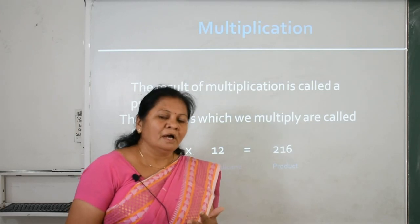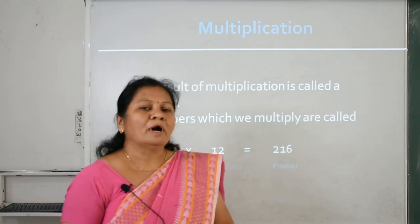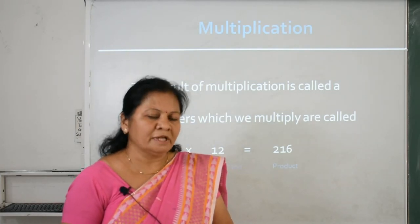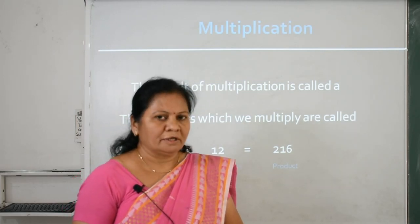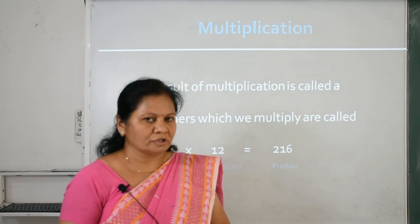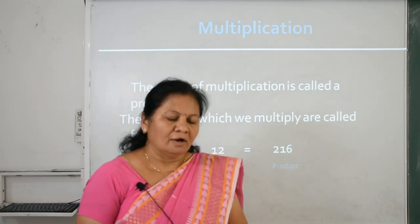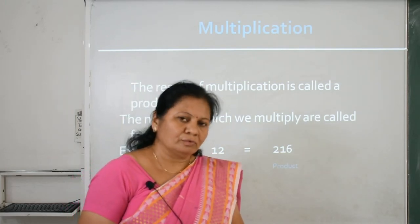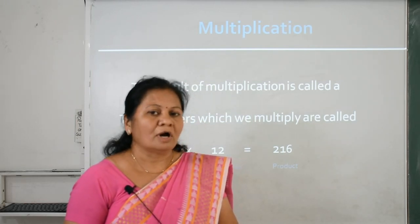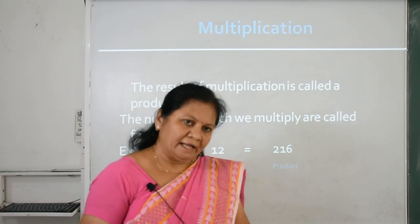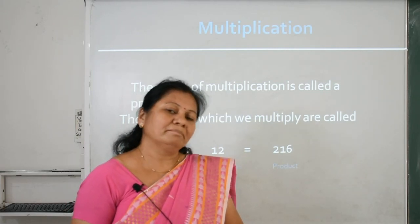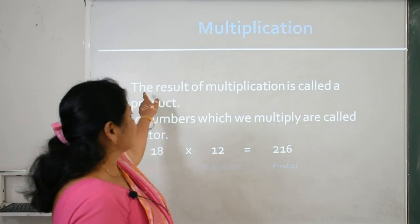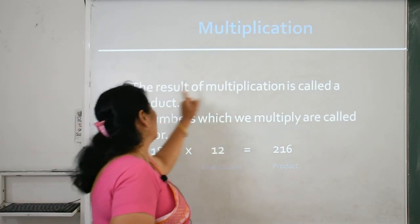For example, when your father gave you 100 rupees and you want to buy some chocolates from the market. You want to buy 4 chocolates. One chocolate costs 20 rupees. So we will multiply 20 by 4, which is equal to 80. So 4 chocolates cost 80 rupees, and you have 100 minus 80 = 20 rupees left. That's why we need multiplication.